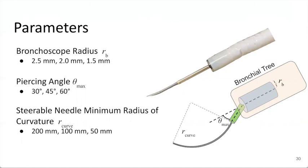the maximum piercing angle with which we can exit the airway into the lung tissue, and the steerable needle's minimum radius of curvature, which is a measure of how curvy of a trajectory the needle can follow, with lower values corresponding to higher levels of curvature.